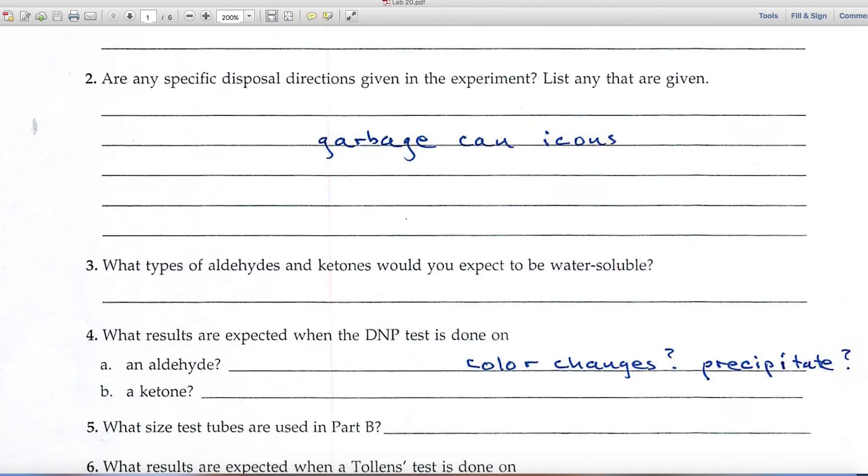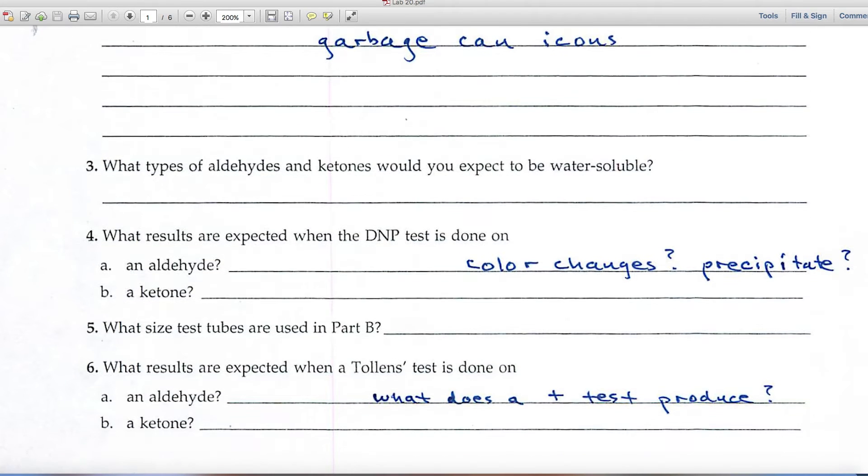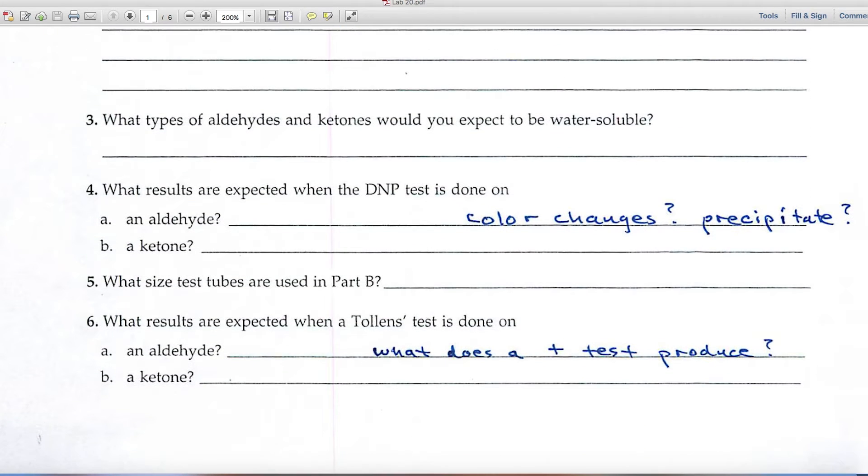And the rest of these questions are pretty straightforward in the pre-lab review. Down on number four, it says what results are expected when the DNP test is done on an aldehyde and a ketone.